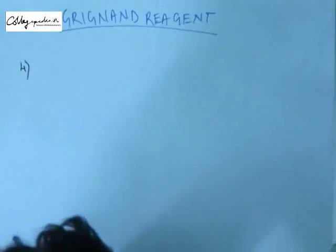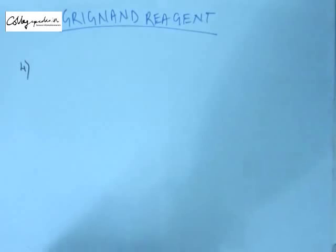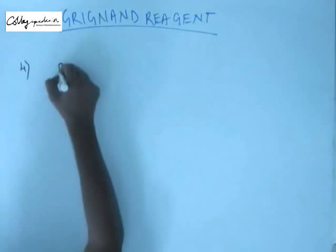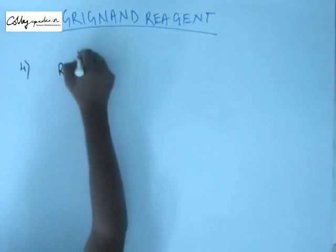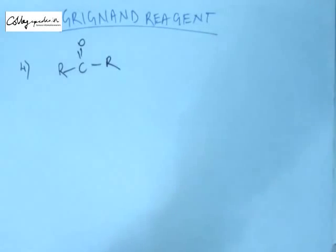Now, formally, the fourth reaction. Up till now, we have done the reaction of Grignard reagent with active hydrogen-containing compounds. We have seen the reaction of Grignard reagent with acid and acid derivatives. We have seen the reaction of Grignard reagent with alkyl halides. Now, the reaction of Grignard reagent with carbonyl compounds will be the same as we have seen in the case of acid derivatives.